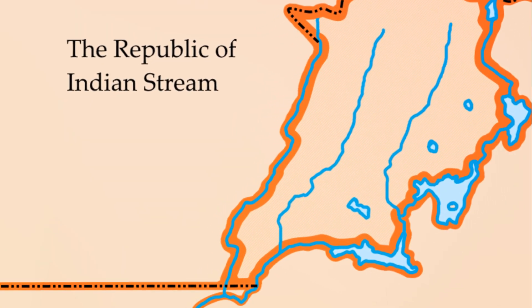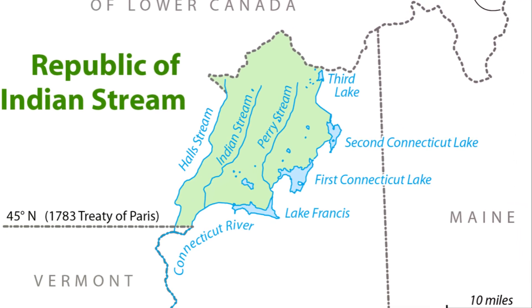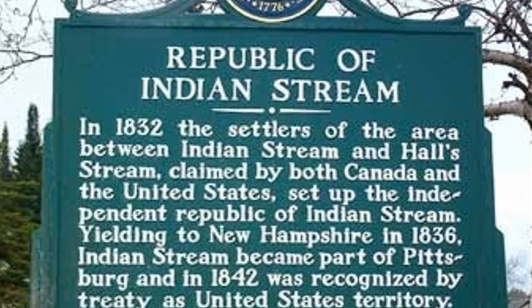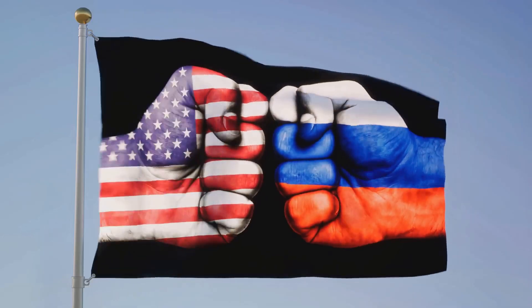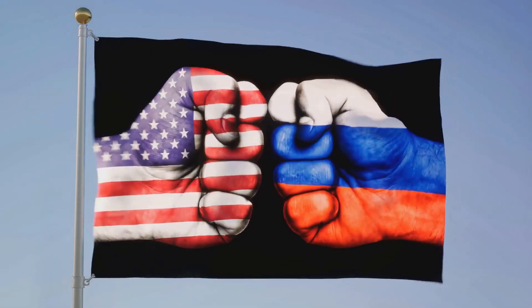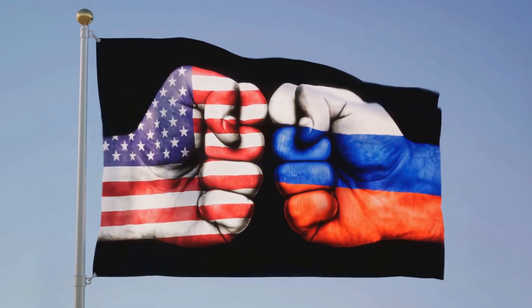The Republic of Indian Stream was not a large nation. It only covered about 300 square miles, roughly the size of modern-day New York City. Yet for the people living there, it represented a bold statement of self-determination and independence. Here we have a small nation nestled between two great powers, born out of a boundary dispute and a desire for self-governance. But how did this country function? Stay tuned as we delve into the inner workings of the Republic of Indian Stream, a nation that dared to be different.